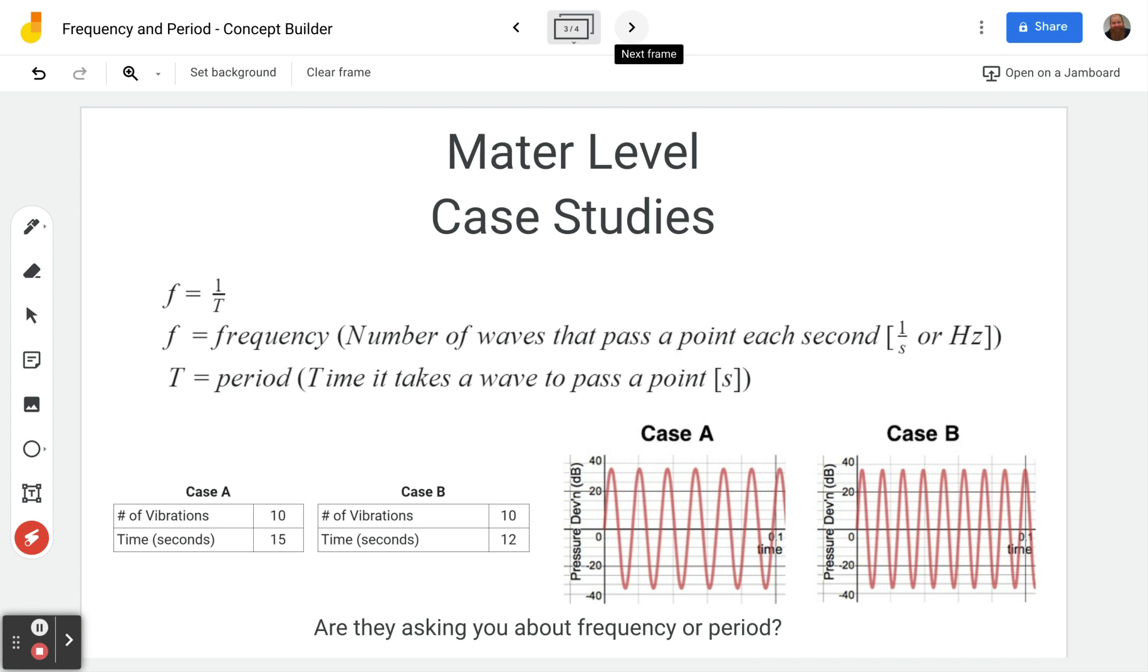Next level is master level, and they've got two types of problems. One gives you numbers, one gives you graphs, which really are numbers. But they have them either way, and they basically ask you which one, case A or B, has a greater frequency or a greater period. Just keep in mind the definition here. The number of waves that pass a point each second is the frequency, and period is the amount of time it takes a wave to pass a point.